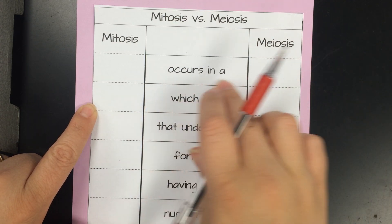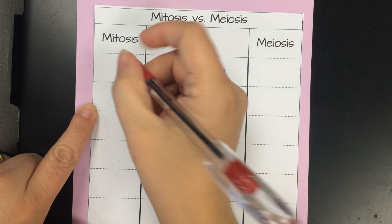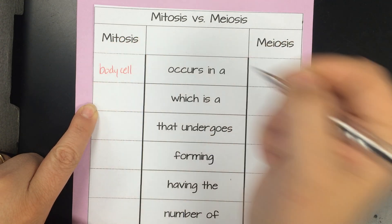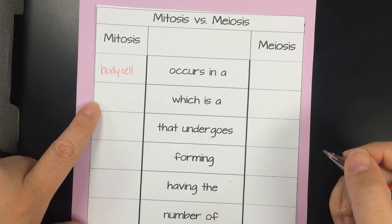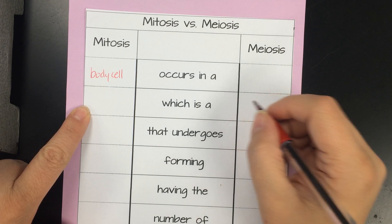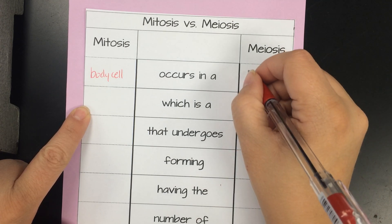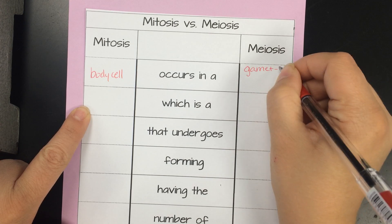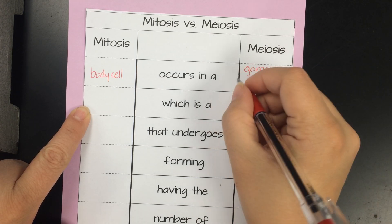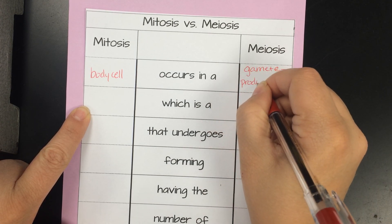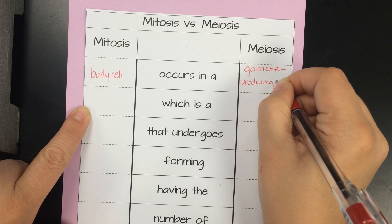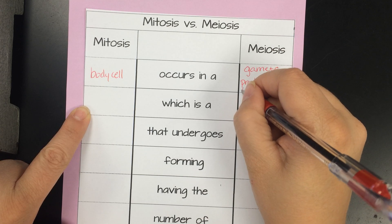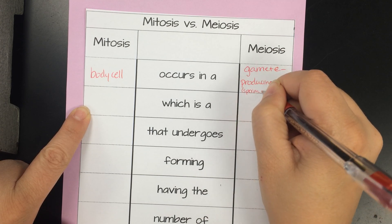Mitosis versus meiosis: occurs in — A. In mitosis, it occurs in a body cell. Actually, every cell in your body except for certain ones goes through mitosis. Meiosis occurs in a gamete-producing cell — these are the cells that are only going to produce sperm or eggs.